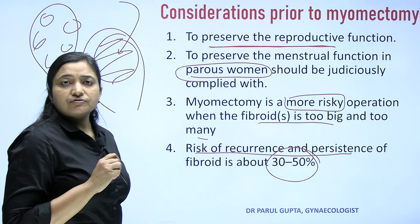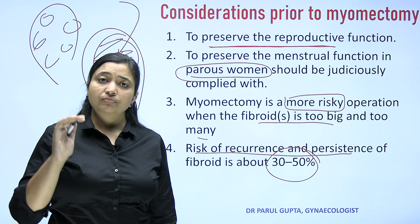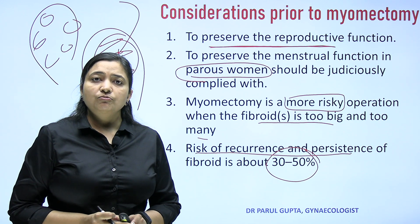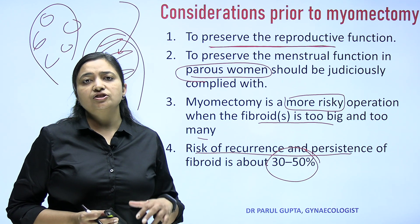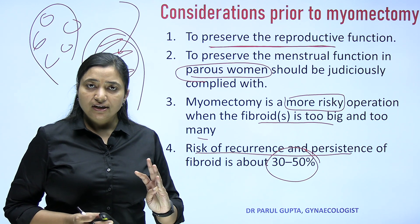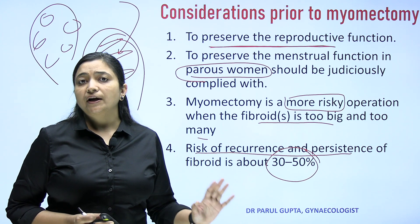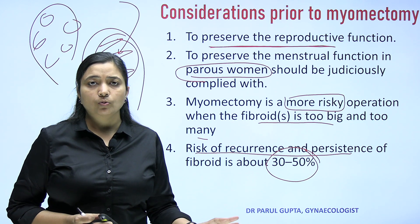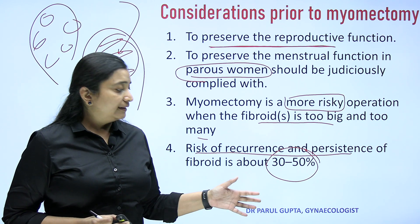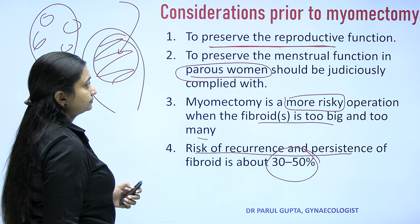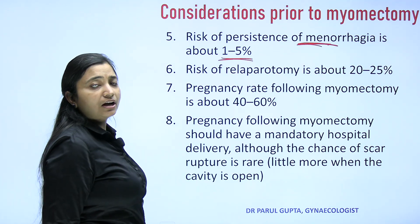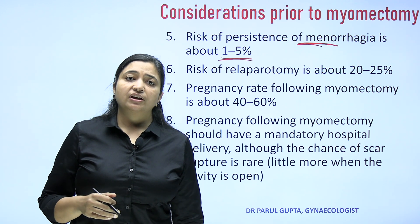Risk of recurrence and persistence of fibroid is 30 to 50 percent. Because fibroids are monoclonal tumors arising from a single myocyte, the genetic predisposition remains. Even after removing one fibroid, within a few years the patient may develop another. So myomectomies are generally done to preserve reproductive function, but for a parous woman seeking only menstrual preservation, she must be told it is riskier than hysterectomy with significant recurrence risk.